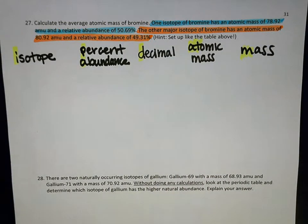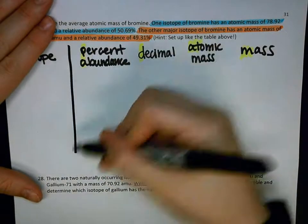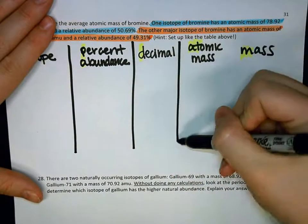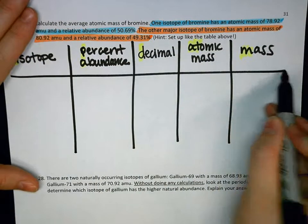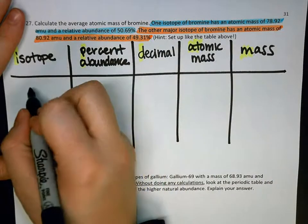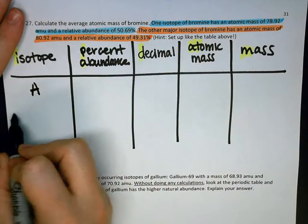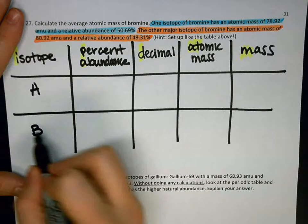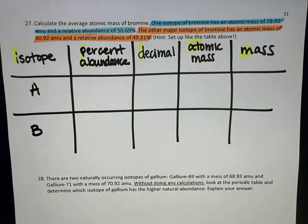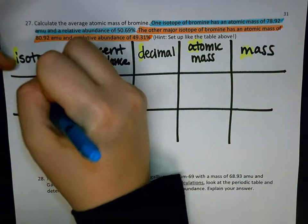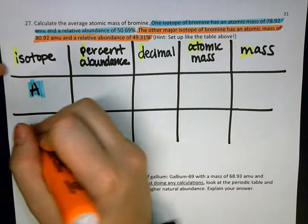There are two isotopes, so we're only going to need two rows here. My first isotope, which I'm going to call isotope A, and then my other isotope, which I'm going to call isotope B. Isotope A is going to be the blue one. Isotope B is going to be the orange one.